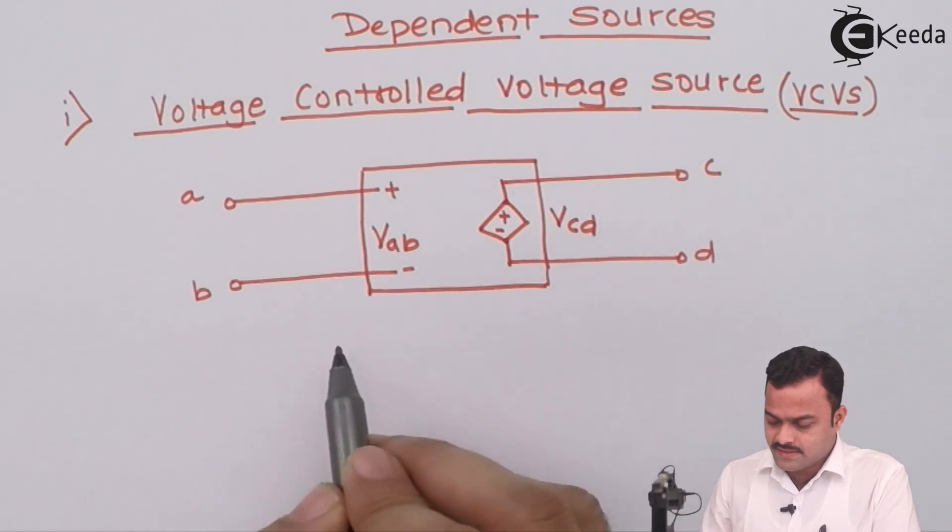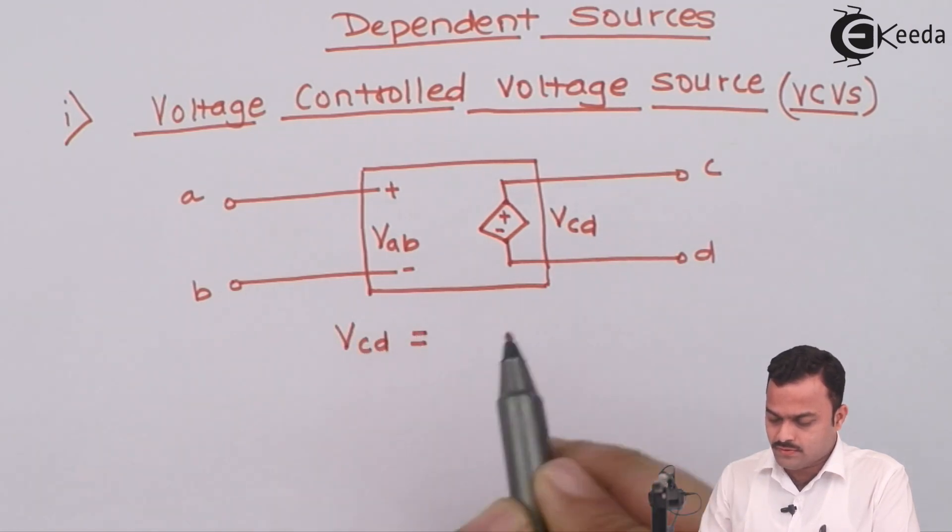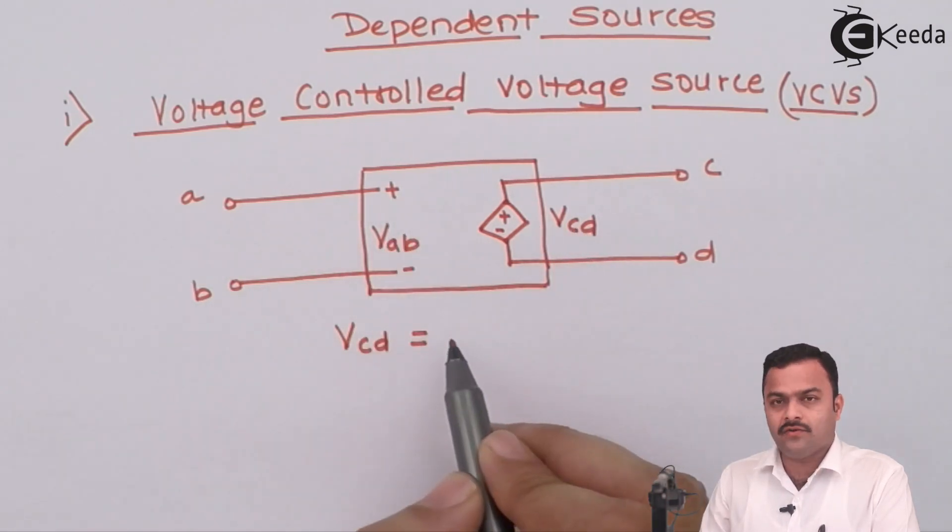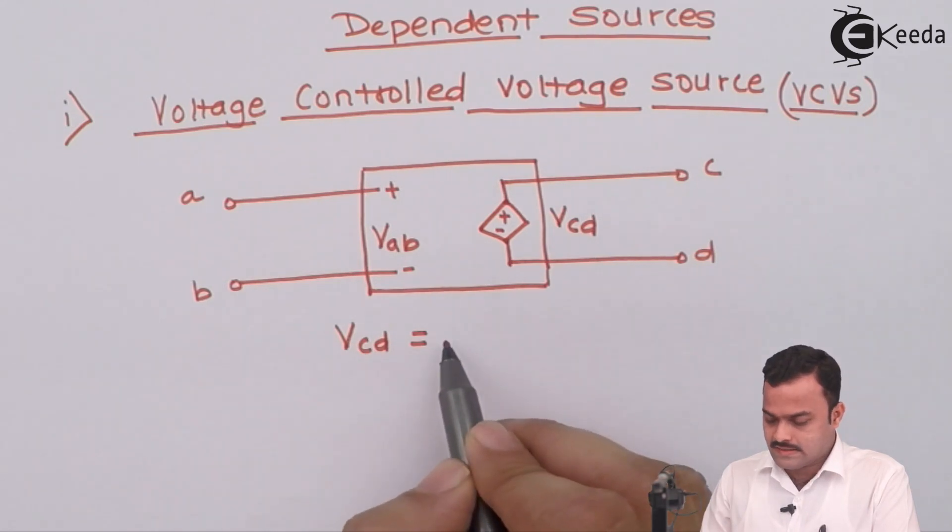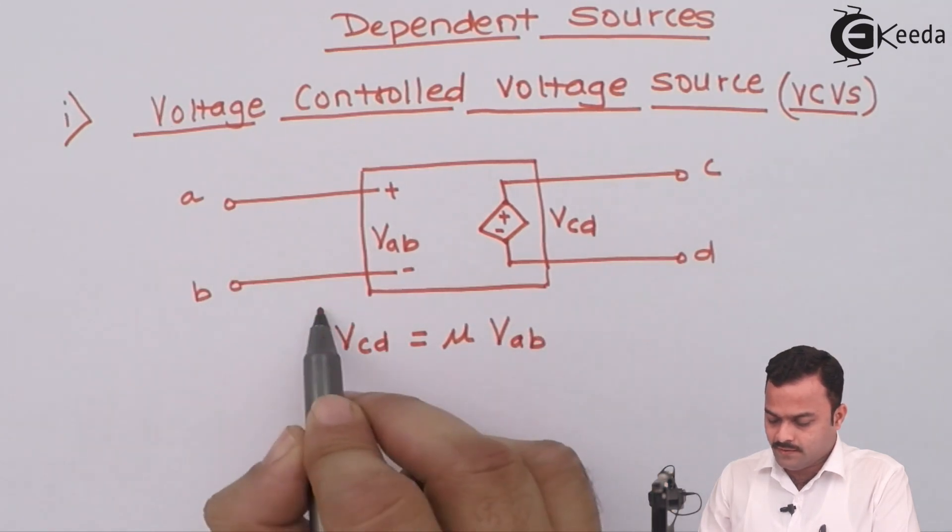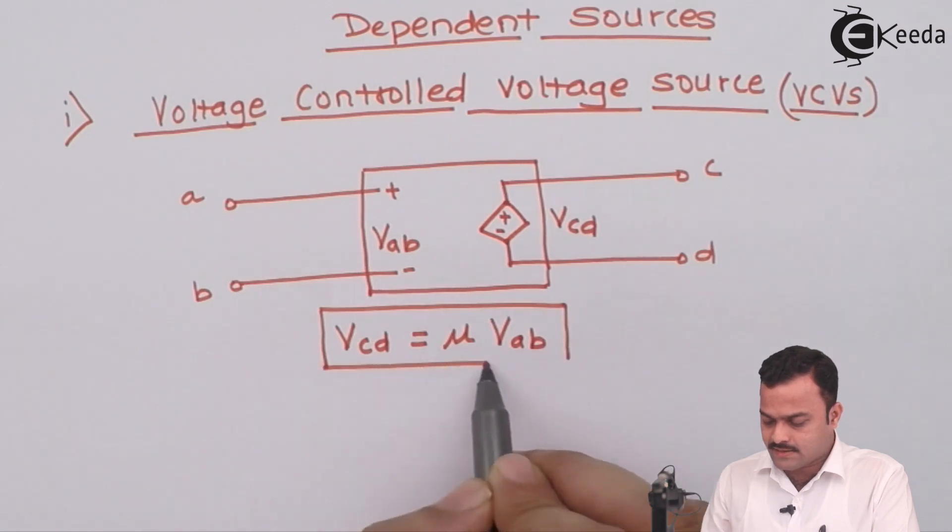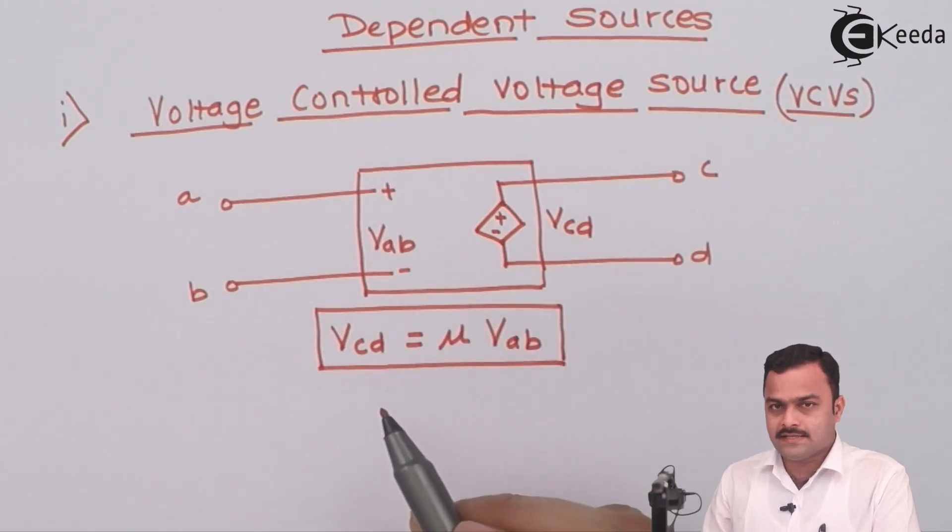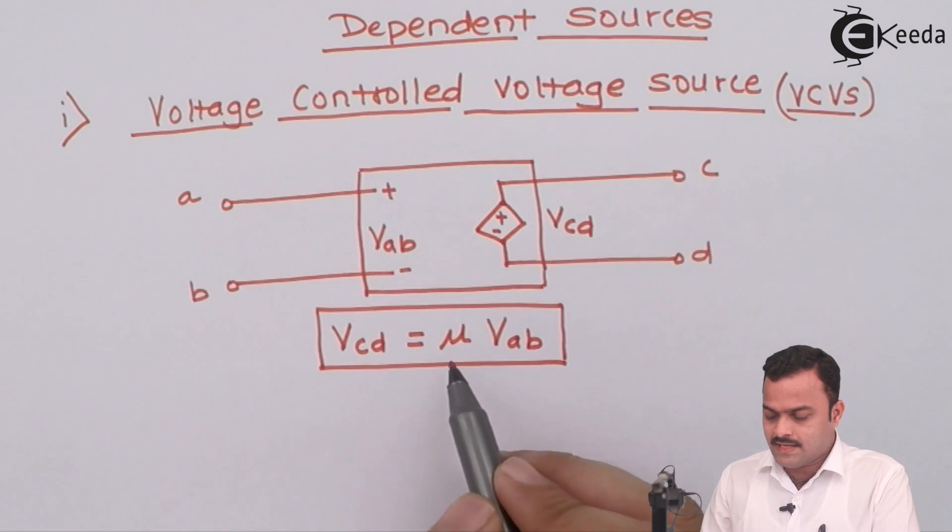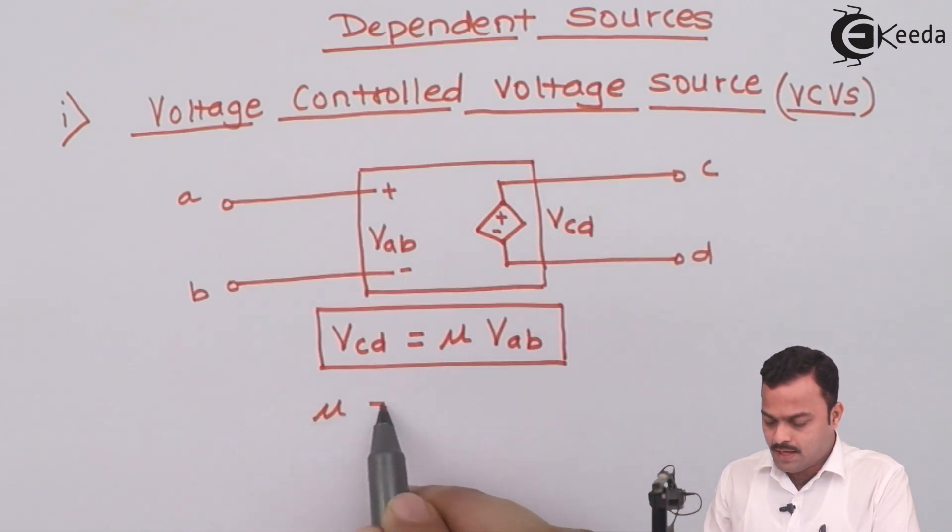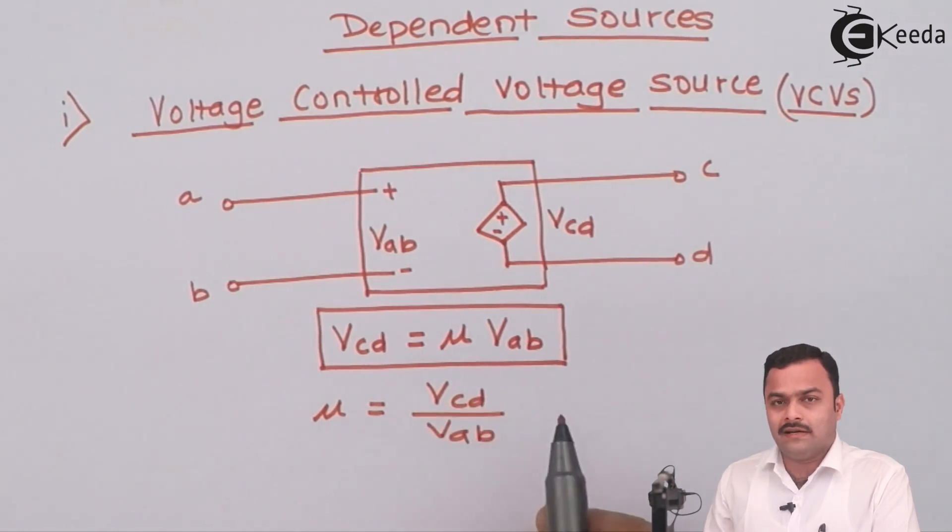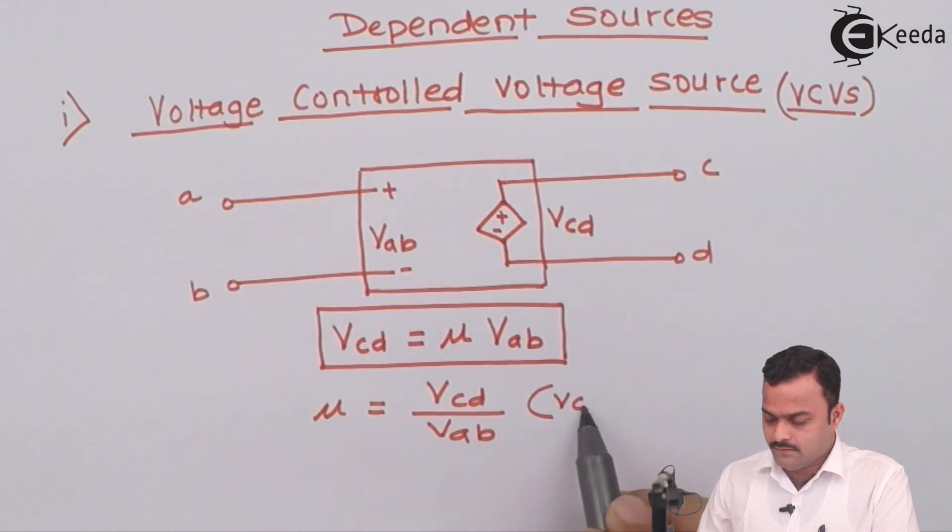And it is shown with a diamond shape like this. So remember dependent sources are shown by this diamond like structure. And let's consider here, this is a voltage developed which is VCD. So what we are seeing. This VCD depends on this voltage. So it's a voltage source. This voltage source depends upon this voltage. And there is a factor. We call that factor as mu.